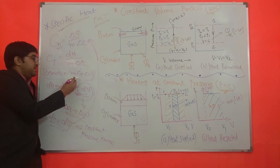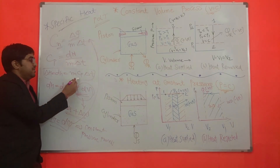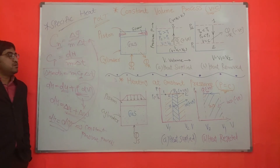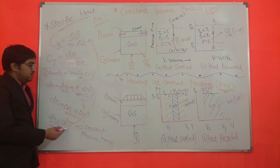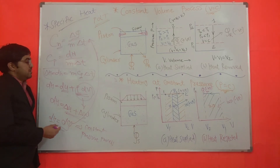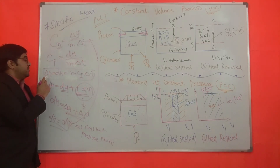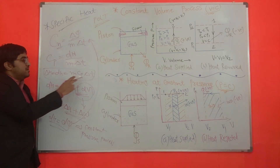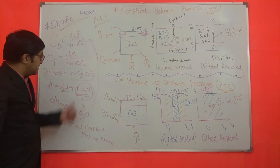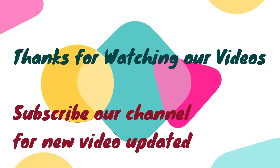Cp means specific heat at constant pressure. Throughout the constant pressure process, DH equals DQ. Substituting this value into the final equation of specific heat, we derive: delta H equals M times Cp times delta T. This is the final equation of enthalpy, derived using the constant pressure process.